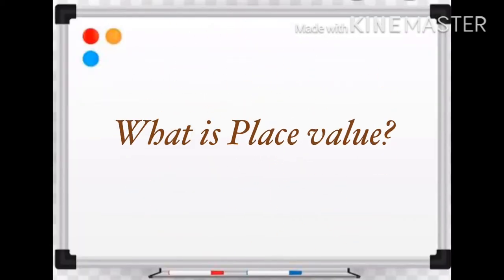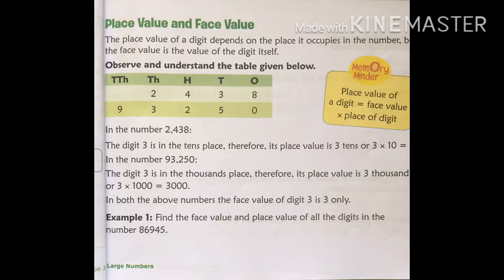Let us understand what is place value. The place value of a digit depends on the place it occupies in the number. For example,